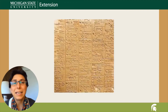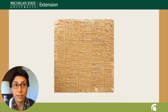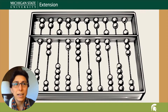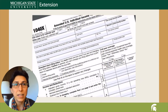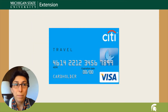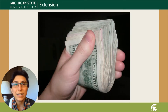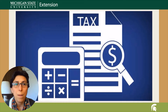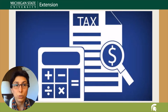Record keeping is the foundation of accounting. An accounting method is a set of rules used to determine when and how the income and expenses being recorded will be reported on the tax return. There are two main accounting methods: accrual and cash. The IRS allows farm businesses to use either method, but once you pick one, you are required to get IRS approval to switch.